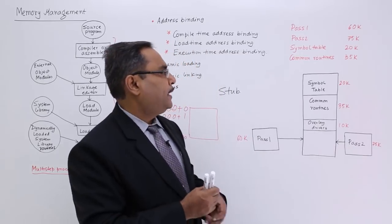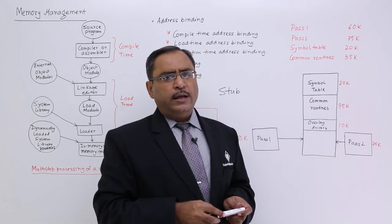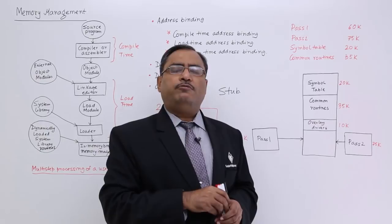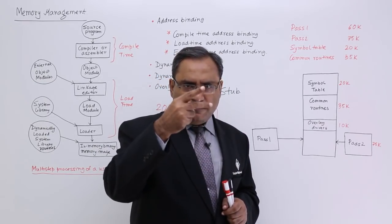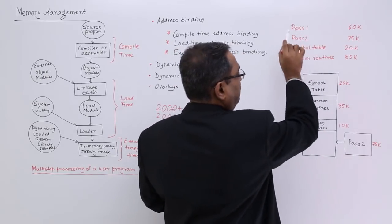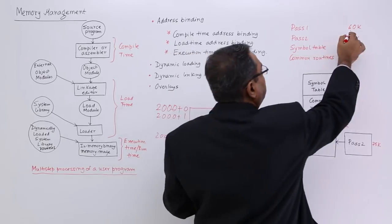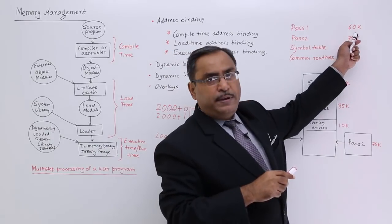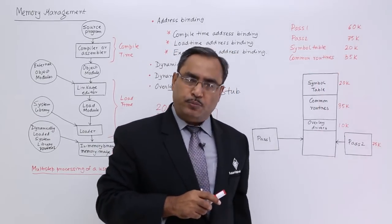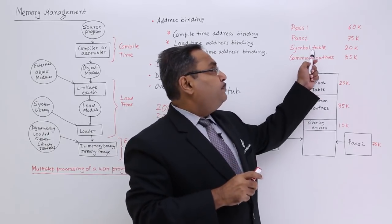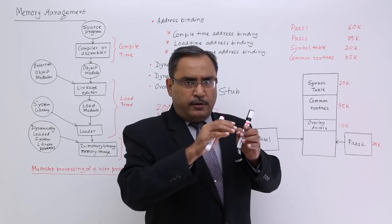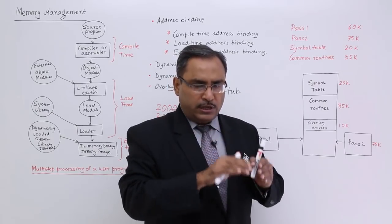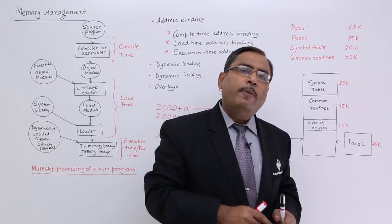Overlays: whenever an assembly language program gets executed, the assembler comes into play. The assembler translates that program in two phases — phase 1 and phase 2. Suppose the code residing in pass 1 of the assembler is taking 60 KB of the computer's memory, and pass 2 is taking 75 KB of the computer's memory. The symbol table, which keeps track of different literals, variables, and labels written in the source program, is occupying 20 KB of memory space.